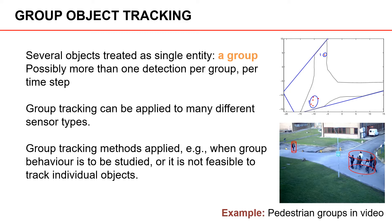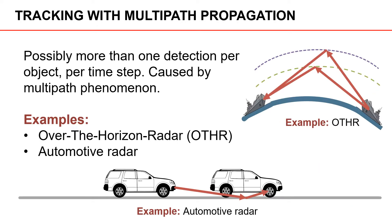Alternatively, it could be the case that it is not possible to discern the individual objects and we are therefore forced to track groups. The fourth type of tracking is called tracking with multipath propagation. Again, we have a possibility of multiple measurements per object, in this case due to multipath propagation. One example is over-the-horizon radar, where the radar signal transmitted by a ship reflects off different layers in the atmosphere, making it possible to reach objects below the horizon that are not in direct line of sight.